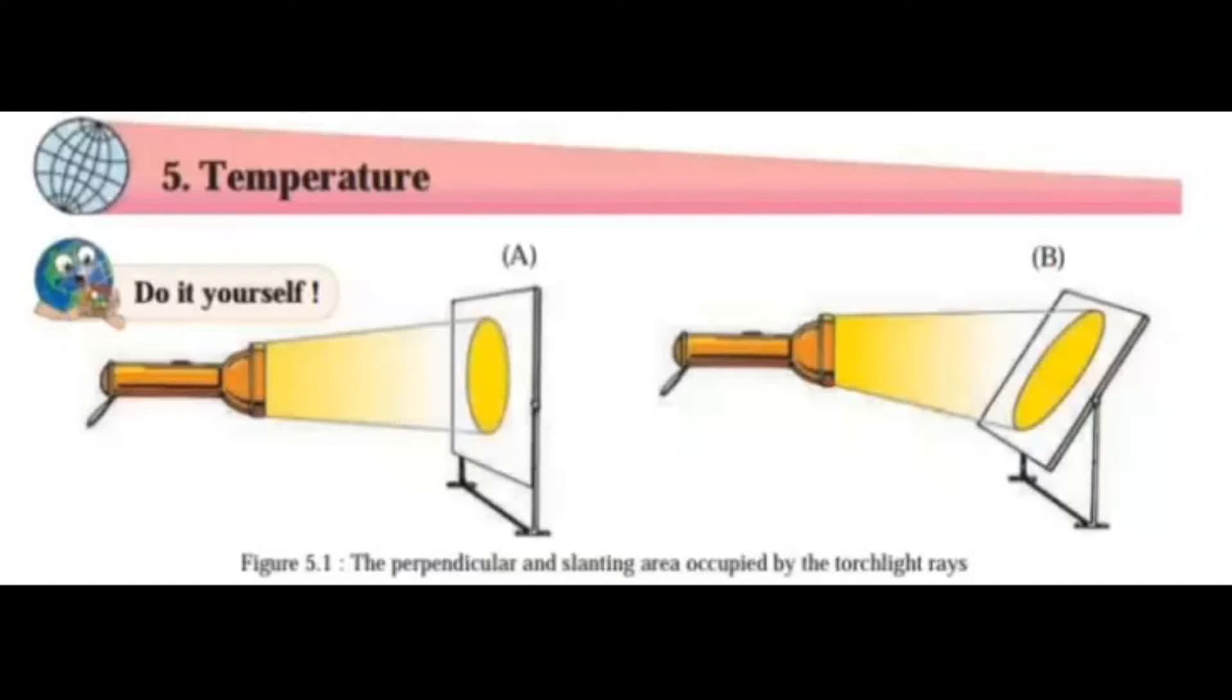Now, use the other paper. Hold it in such a way that it makes an angle of 120 degree with the beam, see figure 5.1b. Draw the outline of the area occupied by the beam. Name the paper B. Observe both the papers A and B.